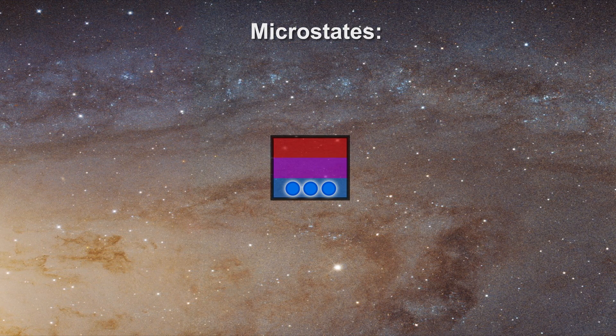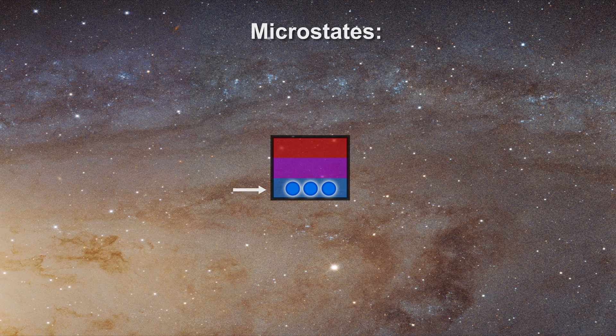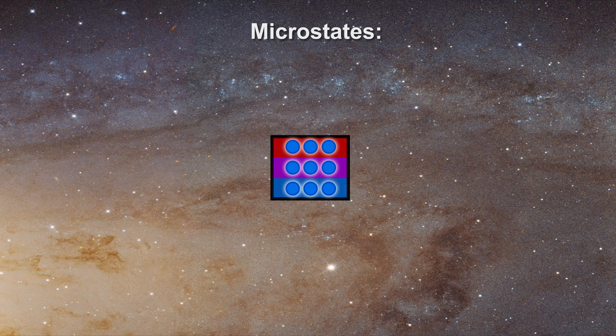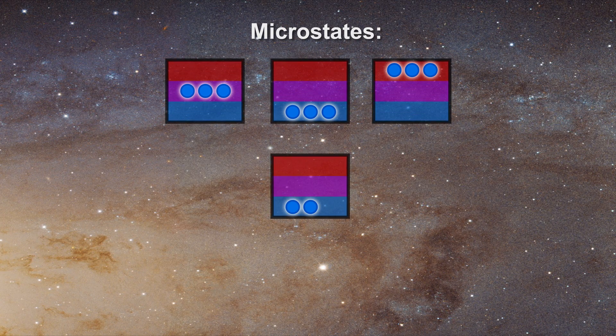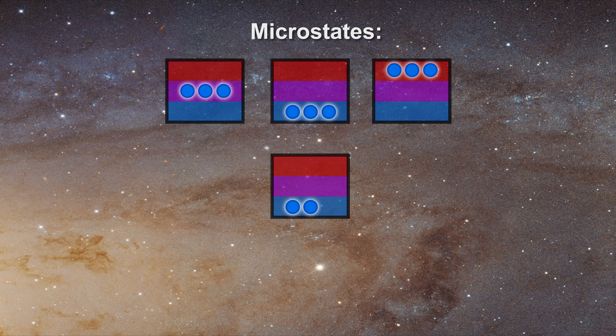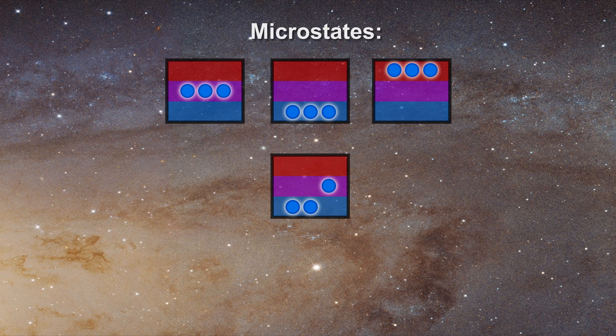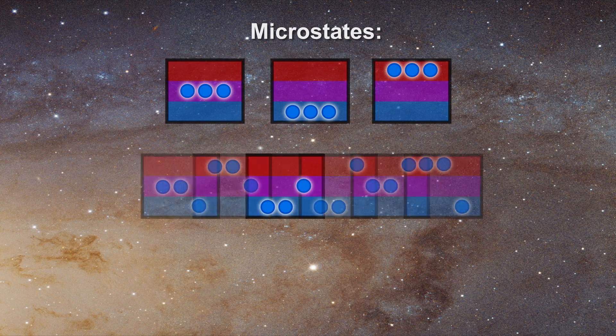You can place all three atoms in the lowest energy level or in one of the other two for a total of three possible microstates. Alternatively, you can place two atoms in one of the energy levels and a single atom in one of the other two, resulting in six more microstates.